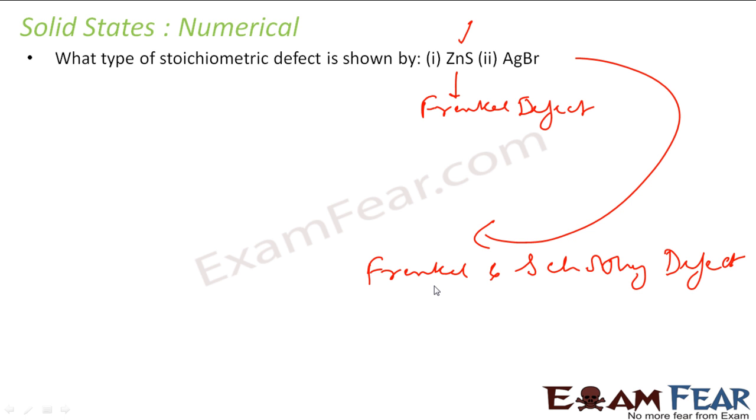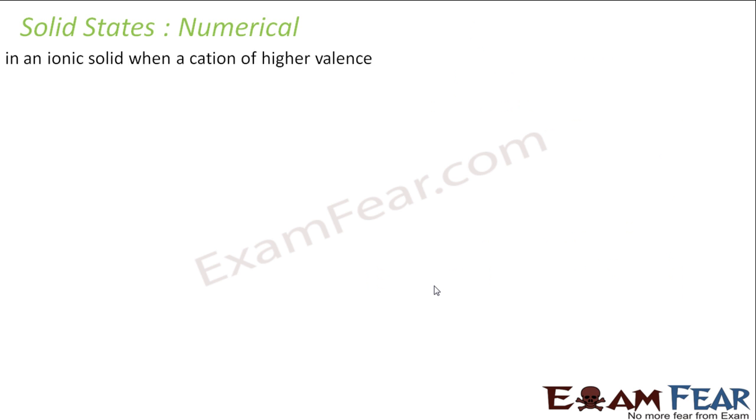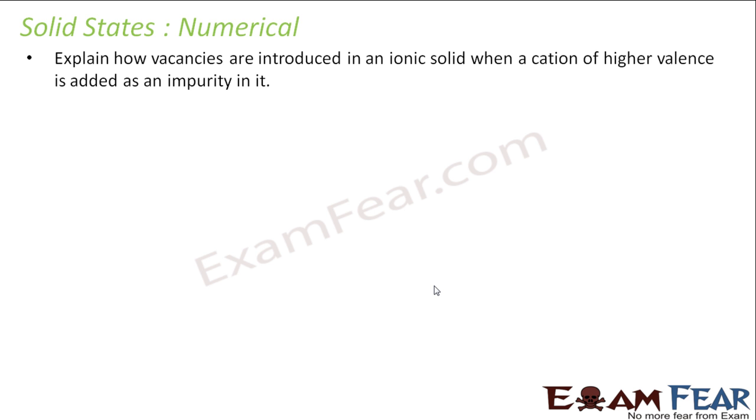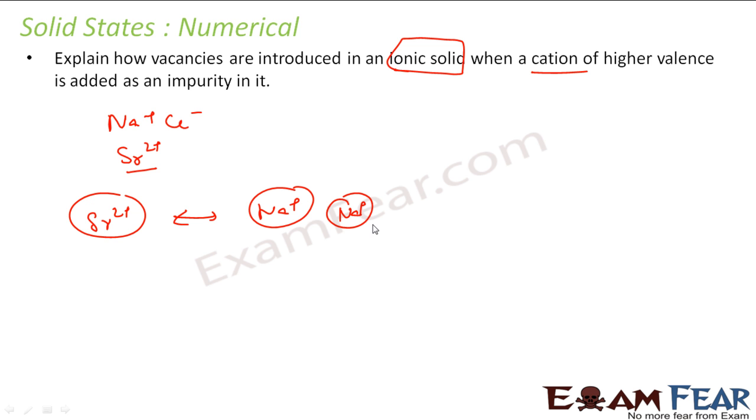The next question is: explain how vacancies are introduced in ionic solids when cations of higher valence are added as impurity to it. So we have an ionic solid, for example can be NaCl, good example. Now cations of higher valence are added as impurity, for example Sr2+ is added. So we know that one Sr2+ molecule is equivalent to two Na+ molecules.